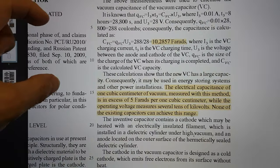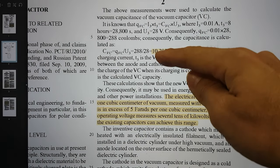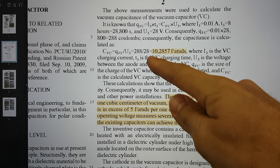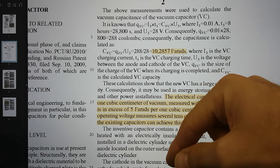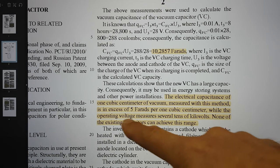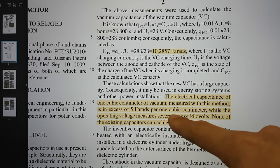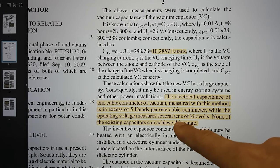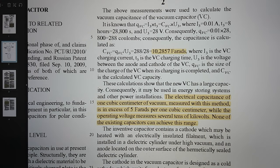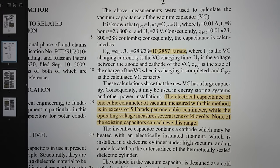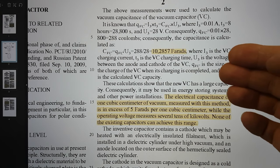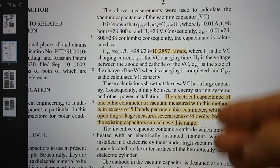In eight hours, the voltage between the metal beaker and the cathode of the 6D6A diode reached 28 volts. He calculates that this is 10.2857 farads. This implies that the electrical capacitance of one cubic centimeter of vacuum measured with this method is in excess of five farads per cubic centimeter, while the operating voltage measures several tens to 12 kilovolts. None of the existing capacitors can achieve this range. Typically, high farad capacitors like supercapacitors would have very low voltages. This is both a small package with a high farad and a very high voltage capability.